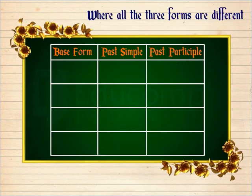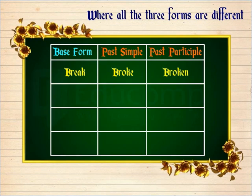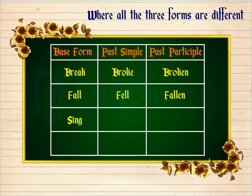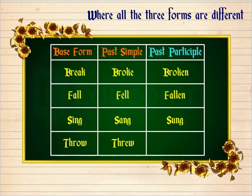Where all the three forms are different. Base form: break, past simple: broke, past participle: broken. Base form: fall, past simple: fell, past participle: fallen. Base form: sing, past simple: sang, past participle: sung. Base form: throw, past simple: threw, past participle: thrown.